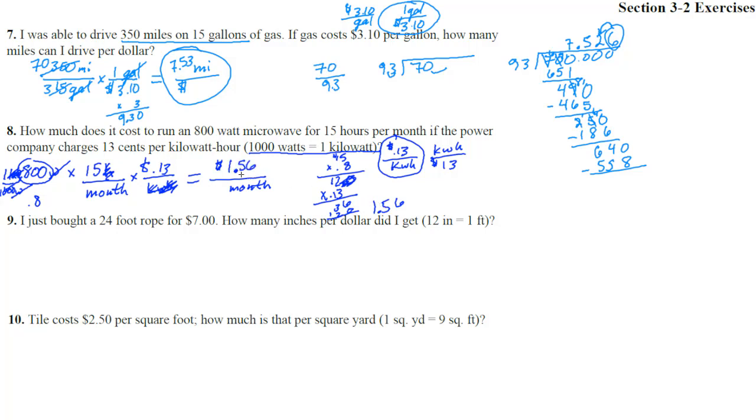What did we just figure out? It costs $1.56 per month to run a microwave. Wow! That's actually pretty cheap. If you think about cooking, how much food you can cook in there. If you used it for 15 hours in a month, a lot of popcorn. All right. Number 9.